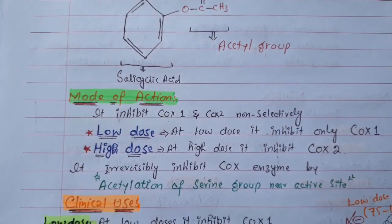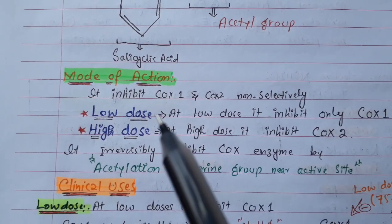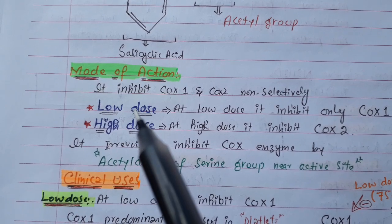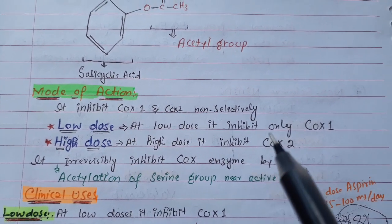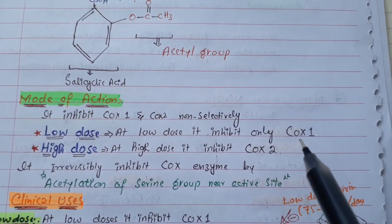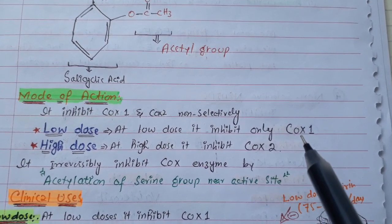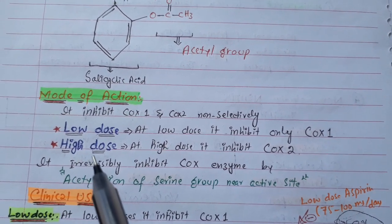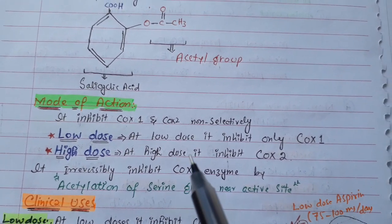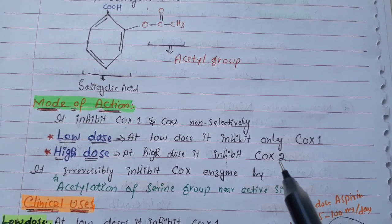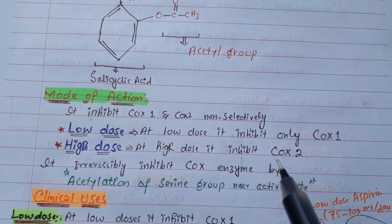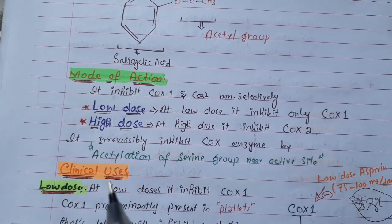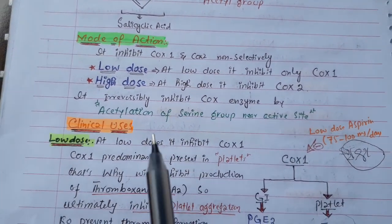By acetylation, aspirin inhibits the COX enzyme irreversibly. An important concept: at low doses, aspirin can only inhibit COX-1, which is predominantly present in platelets. At high doses, it inhibits COX-2, which is predominantly present in inflammatory cells.